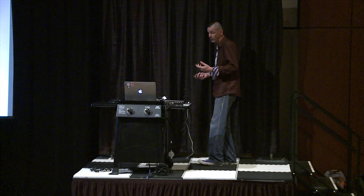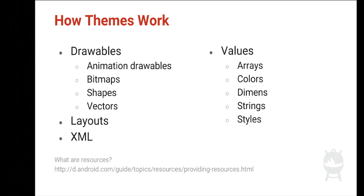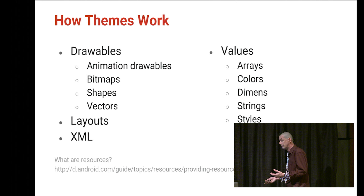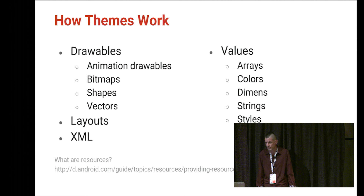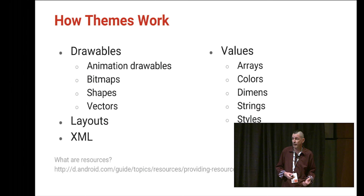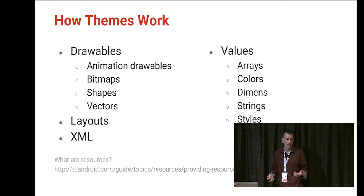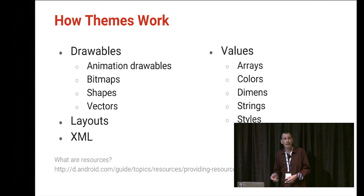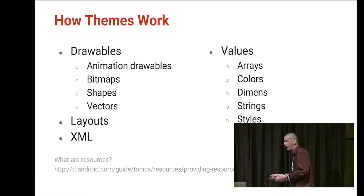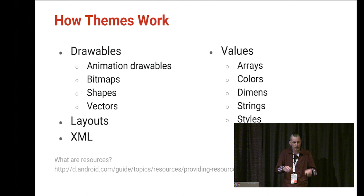There are layouts, which define the UI for the application — where views and buttons are. There's XML, which is generic and specific to the application. Then there's values — XML which defines arrays, colors, dimensions for padding and text size, and strings. Styles are a collection of attributes that determine how an application or UI element looks — a bag that takes all these attributes, puts them together, and displays those to the user.